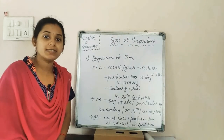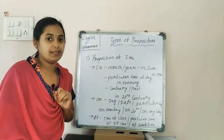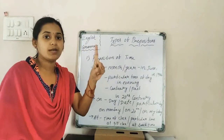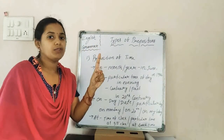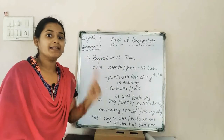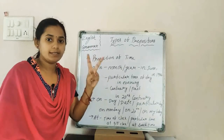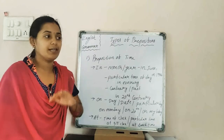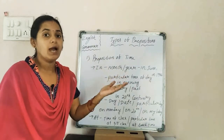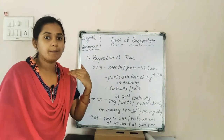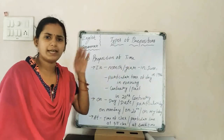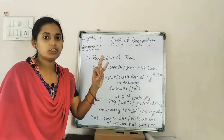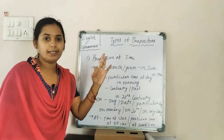We have discussed that the preposition tells us three things. The first one is the time of the event. The second one is the place of the event. And the third one is the direction — whether a particular thing or person is going or coming.